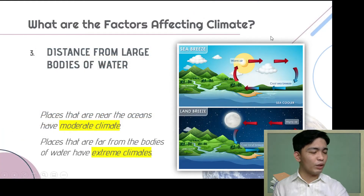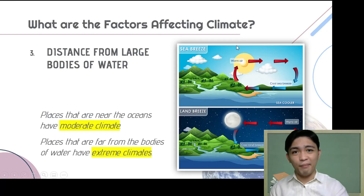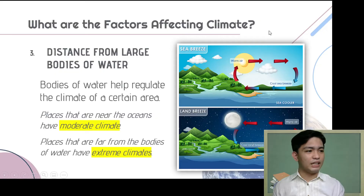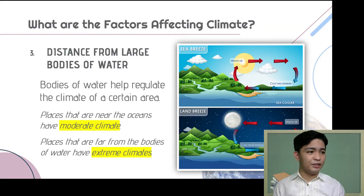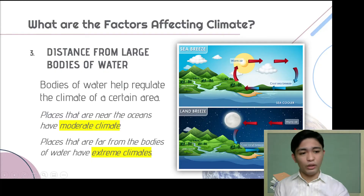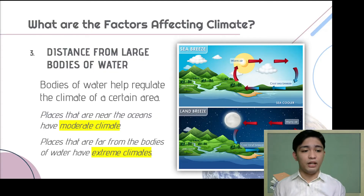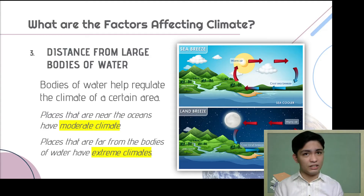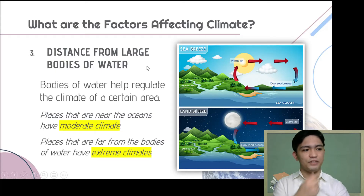The third factor is distance from large bodies of water. Bodies of water help regulate the climate of an area. Places near oceans or bodies of water have moderate climate, whereas places far from bodies of water have extreme climates. During summer, areas near bodies of water have moderate temperatures because the water absorbs more heat. During winter, the surrounding water slowly releases heat, causing less cooling effect in nearby land masses. So the presence of large bodies of water is very important in moderating climate.